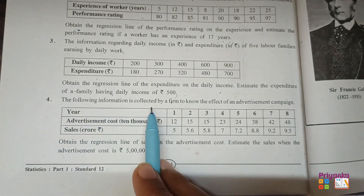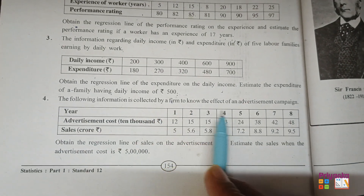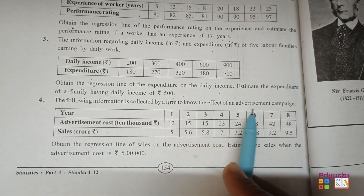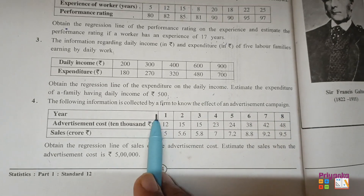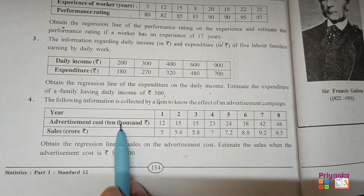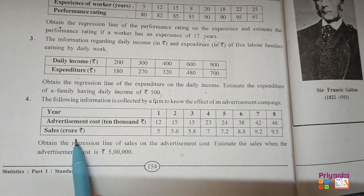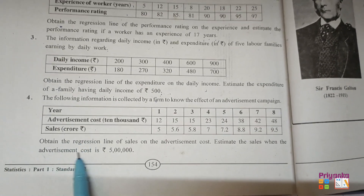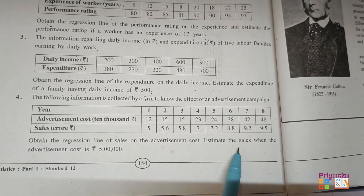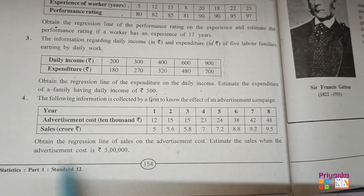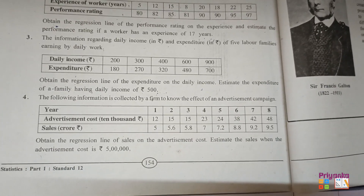Question number 4. The following information is collected by a firm to know the effect of an advertisement campaign. Here, advertisement cost is in 10,000 and sales are in crore. Obtain the regression line of sales on the advertisement cost.